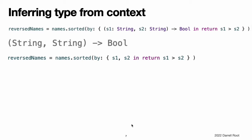Inferring type from context. Because the sorting closure is passed as an argument to a method, Swift can infer the types of its parameters and the type of the value it returns. The sorted-by method is being called on an array of strings, so its argument must be a function of the type (String, String) -> Bool. This means that the String, String, and Bool types do not need to be written as part of the closure expression's definition. Because all of the types can be inferred, the return arrow and the parentheses around the names of the parameters can also be omitted. It is always possible to infer the parameter types and return type when passing a closure to a function or method as an inline closure expression. As a result, you never need to write an inline closure in its fullest form when the closure is used as a function or method argument.